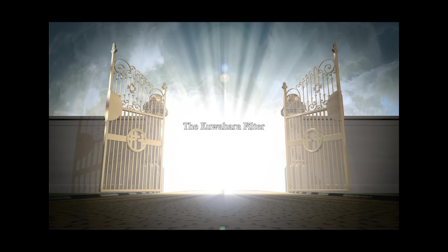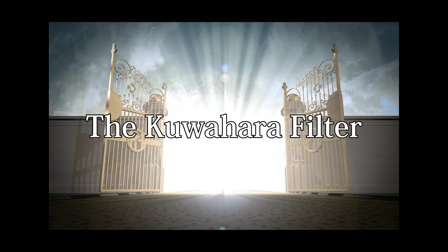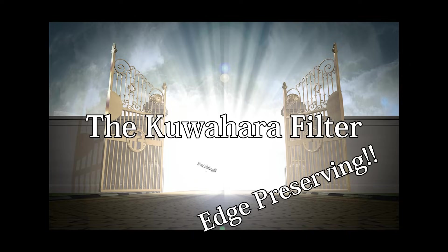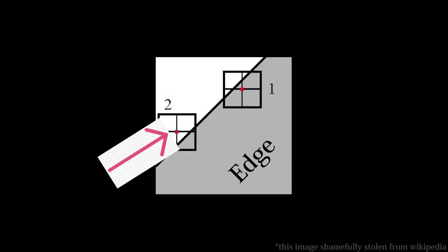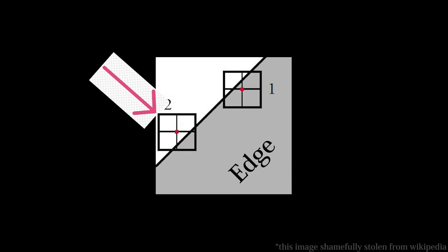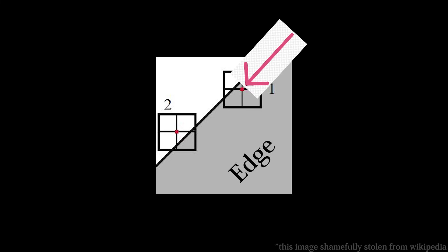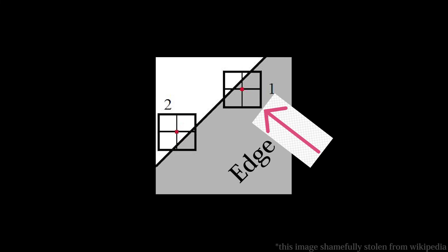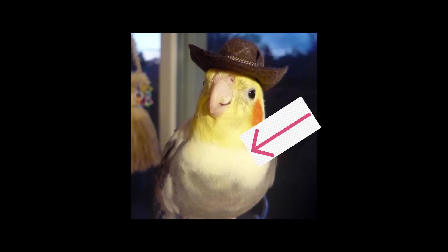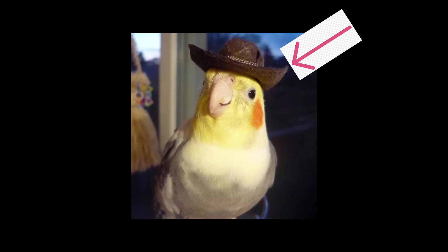Thus was born the Kuwahara filter, one of the world's first edge-preserving, denoising, image-processing algorithms. The edge preservation works like so. If the pixel is a little outside of an edge, then the quadrant with the lowest variance won't be the edge. But if the pixel is on the edge, then the quadrant with the lowest variance will be the edge, ensuring that we blur largely homogenous areas while still maintaining details like edge lines.